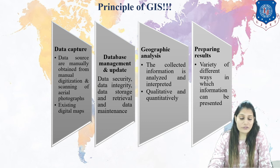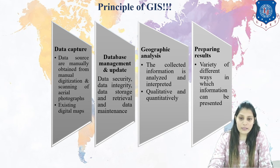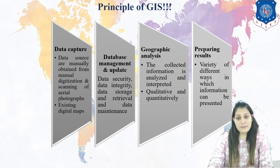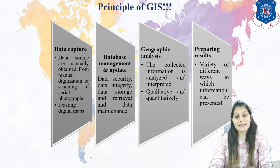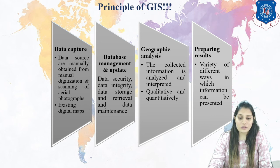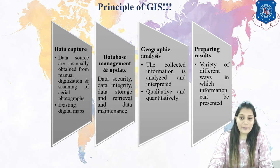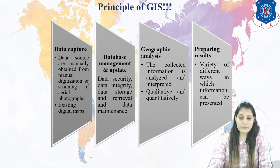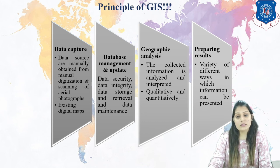Proper integration is also a major question — if it is not properly integrated, we will not get the proper output. Now, geographic analysis: the collected information is analyzed, interpreted — both qualitative and quantitative analysis should be given. Subjective and objective analysis is very important. More analysis means a better decision-making support system. If analysis is not proper, it will not give us a good decision support system. Data interpretation, manipulation, and geographic analysis are very important.